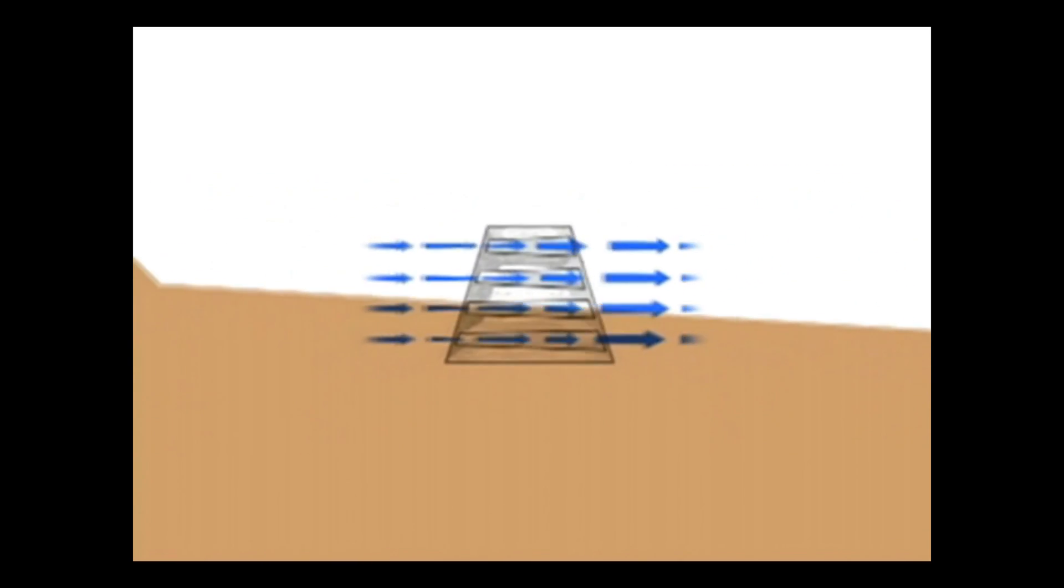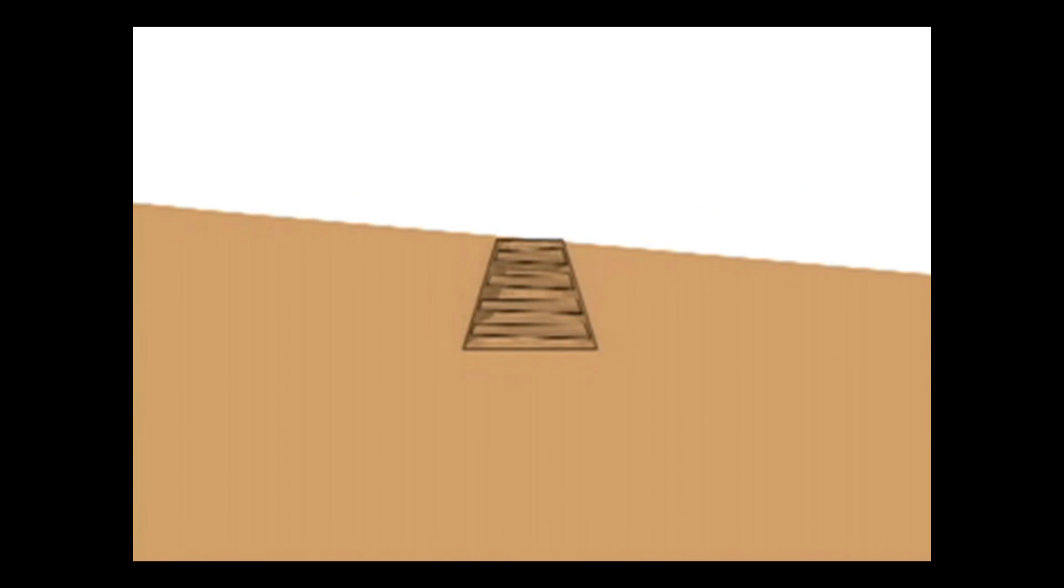Thus, beach erosion is halted and beach accretion occurs on both the land and seaward sides of Sand Saver.